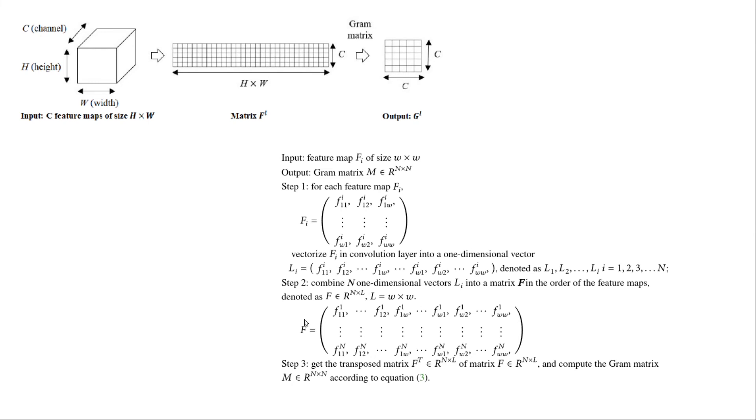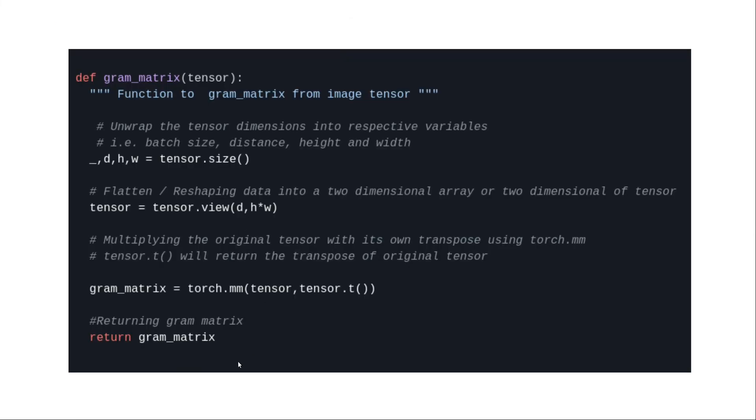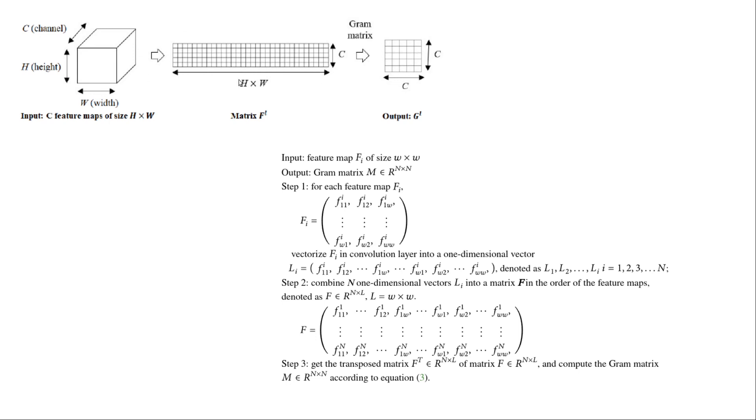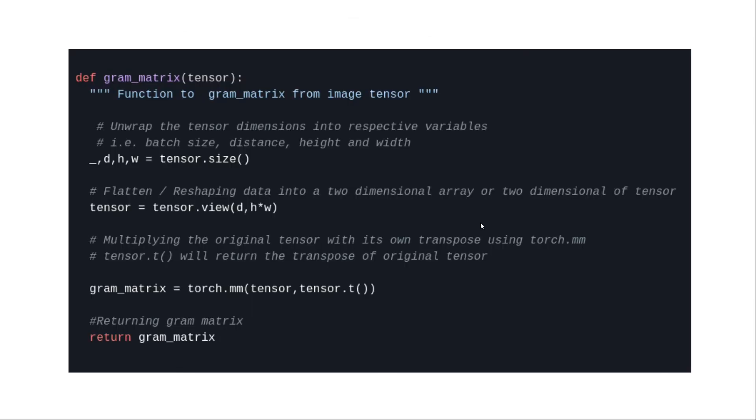Following this same algorithm, a simple Python implementation is here. So look at the function, this gram_matrix takes a tensor, function to Gram matrix from image tensor, right. And first thing that I was doing here is I am unwrapping them to flatten them. So here exactly I'm doing that: first I'm getting from tensor.size() I'm getting their batch, then the height, width, and the distance, and then I am doing tensor.view to flatten them. And the parameters passed are D and H into W, D is the depth and height and width.